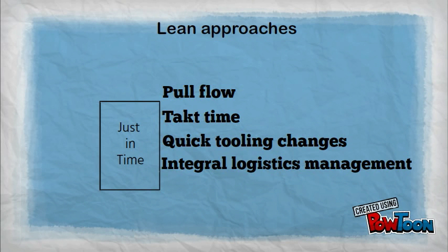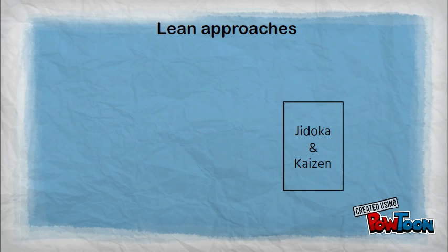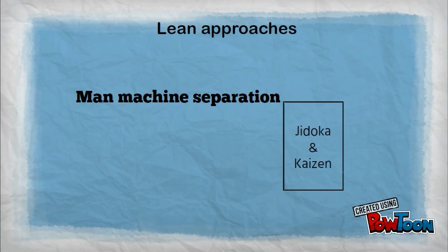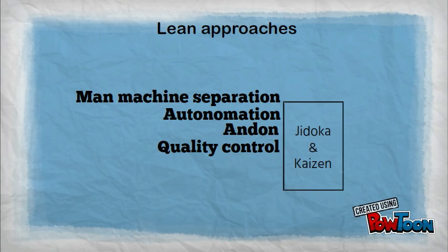Quick tooling changes, and integral logistics management, where both in-house and externally sourced parts are tracked all the way during production, and 5S. Lean also relies on Jidoka and Kaizen — making problems visible so that employees can act on abnormalities. This is achieved through man-machine separation, where one operator can manage various machines, and automation, where one operator managing the machines can detect problems and can stop or slow down production, then fix or correct the immediate problem, and investigate the root cause of the issue to take measures to ensure it does not happen again — for instance, by making assembly of parts mistake-proof through Poka-Yoke.